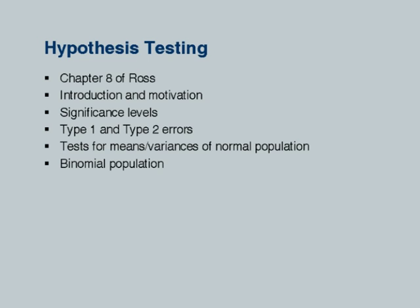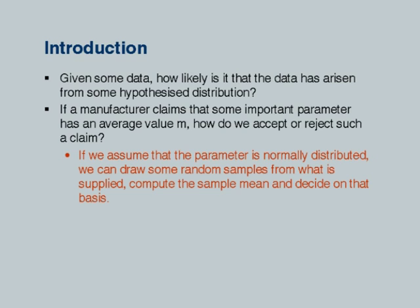A notion of significance levels, which is a way of saying how confident we are of our hypothesis test — when we agree or disagree, with what probability are we sure of doing that. There is well-known terminology: type one and type two errors, which we will quickly cover. Specifically we will apply hypothesis testing to normal populations, and also to binomial probabilities for populations.